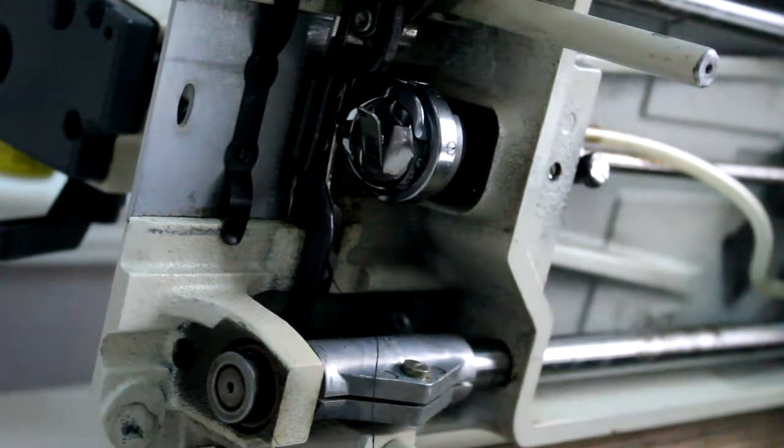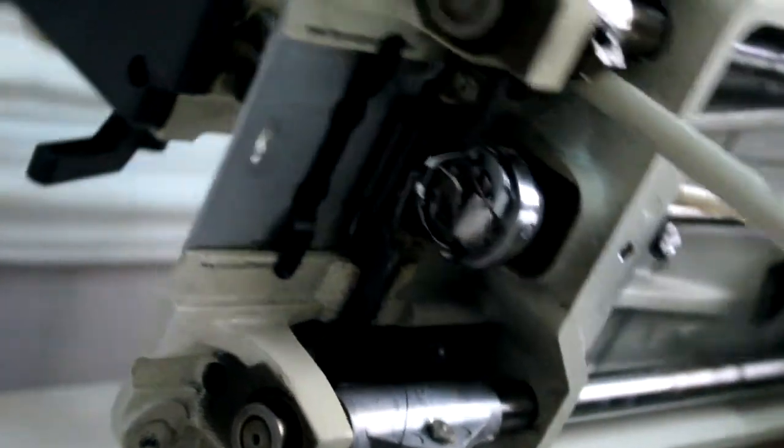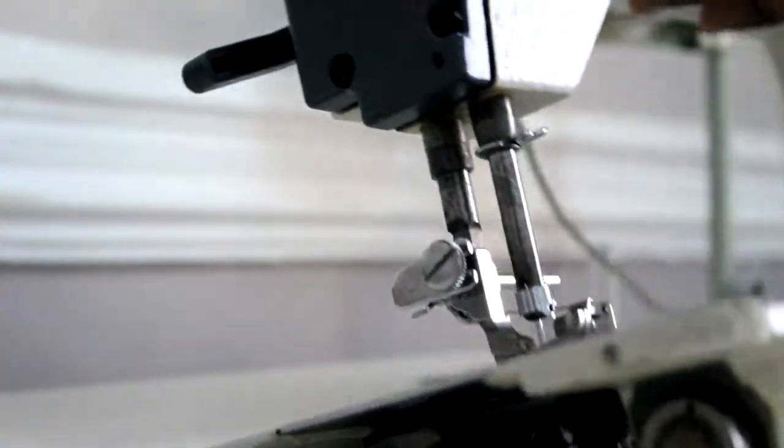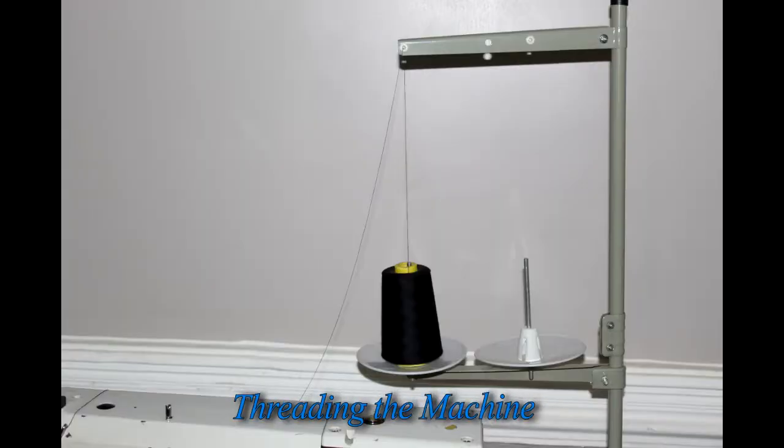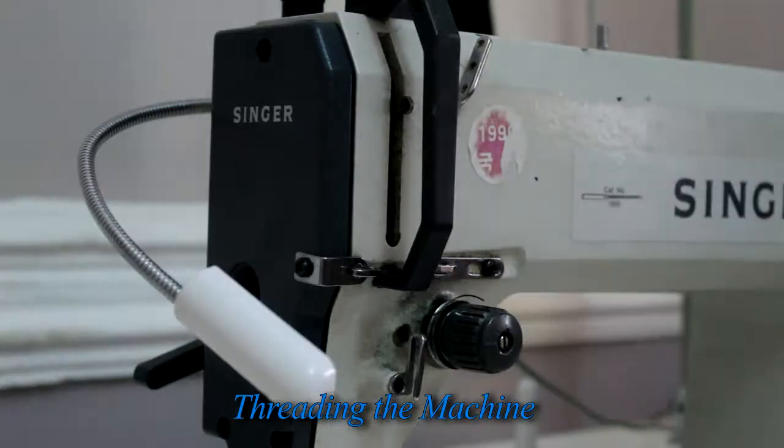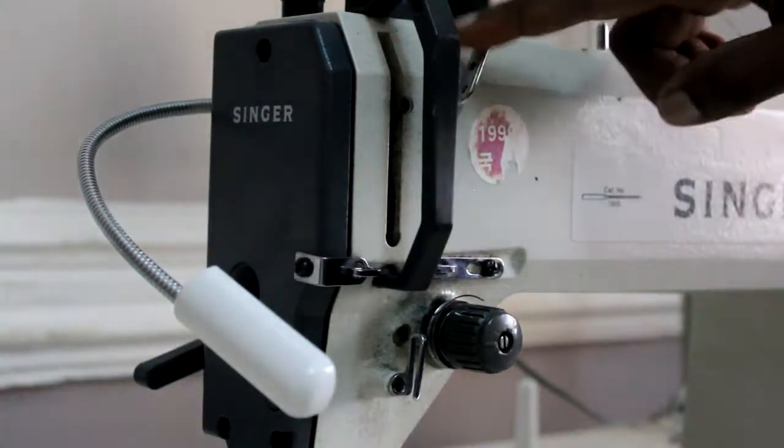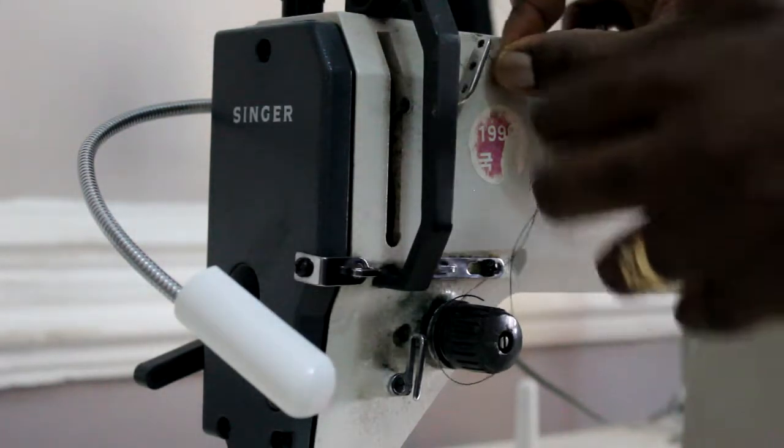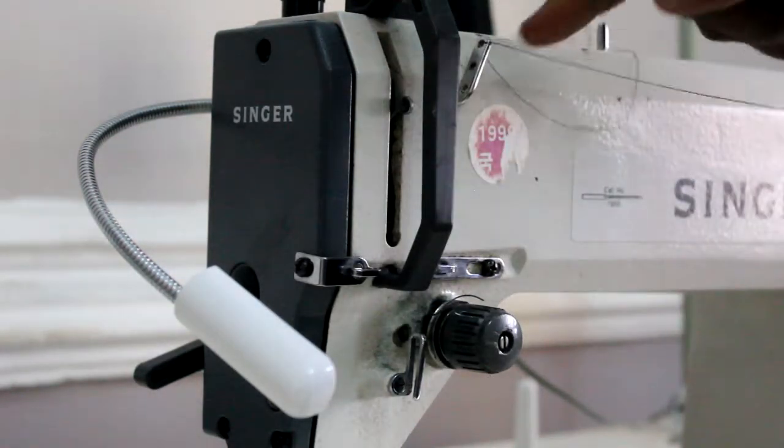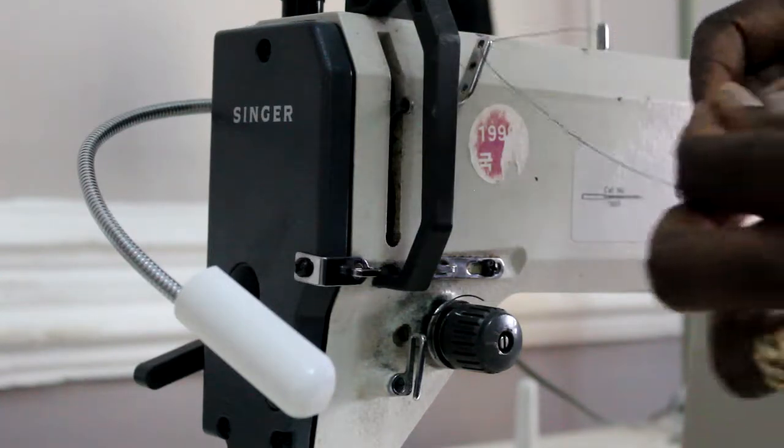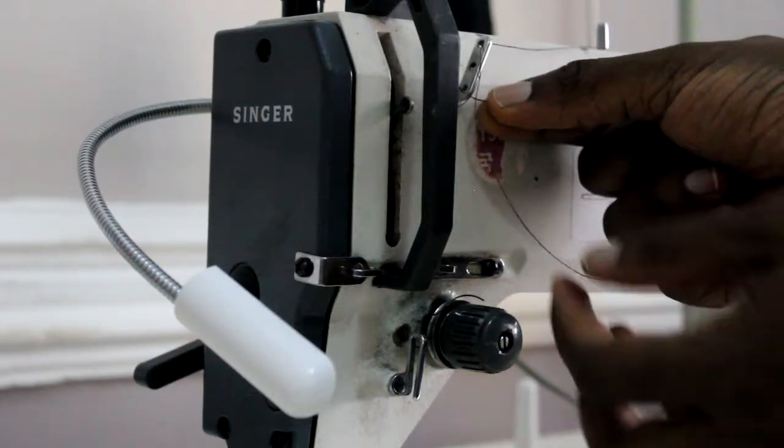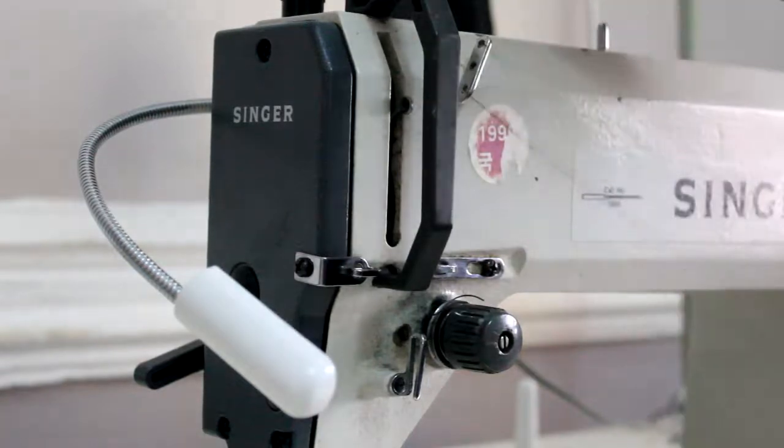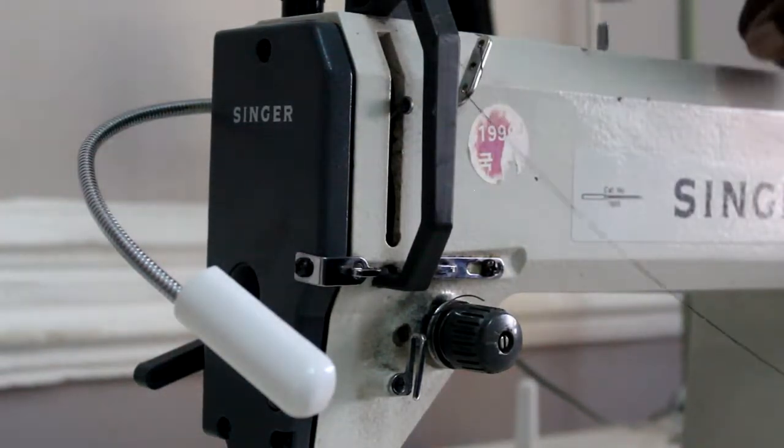Now to thread the machine, put your thread on the upper spool there and we're going to pass it through the thread guides at the top of the machine. I'll pass it through the first hole—there are three holes there from beneath. Then I'll pass it through the third hole from beneath. You can change this depending on how thick your thread is. There's another thread guide up there but mine is broken so we'll just continue as we are.